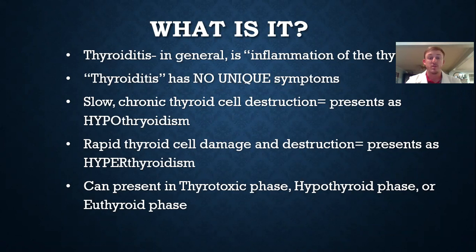It has no unique symptoms that really set it apart from other chronic conditions. Slow chronic thyroid cell destruction presents as a hypothyroidism state, whereas rapid thyroid cell damage and destruction presents as a hyperthyroidism state. It typically has three phases: the thyrotoxic, hypothyroid, and euthyroid phases.